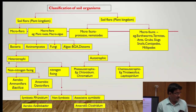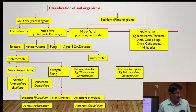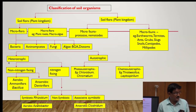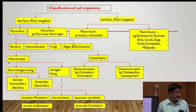Autotrophic bacteria are divided into two groups: photo-autotrophic and chemo-autotrophic. For example, photo-autotrophic bacteria include Clostridium. Chemo-autotrophic bacteria include Thiobacillus and Leptospirillum. These are examples of chemo-autotrophic bacteria.